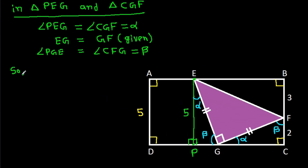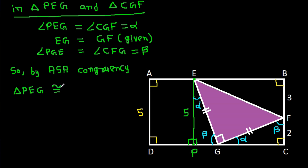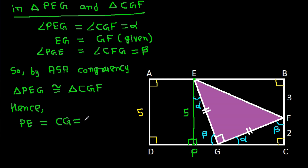In triangle PEG and triangle CGF: angle PEG equals angle CGF (that is alpha), EG equals GF (given), and angle PGE equals angle CFG (that is beta). So by Angle-Side-Angle congruency, triangle PEG is congruent to triangle CGF. Hence PE equals CG, and since PE is 5, CG will also be 5.